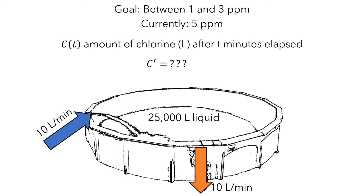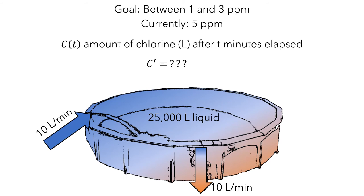The pool initially has a mixture with a lot of chlorine, so the liquid being pumped out has a lot of chlorine and c' is large. But as more fresh water is pumped in, it mixes with the liquid already in the pool, so the pool has less chlorine. This means the water pumped out has less chlorine, so c' is small. If we assume that the chlorine gets evenly mixed with the fresh water, then it is also evenly mixed in the liquid being pumped out. So the proportion of chlorine pumped out equals the overall proportion of liquid being pumped out.